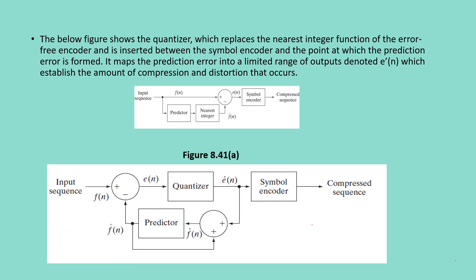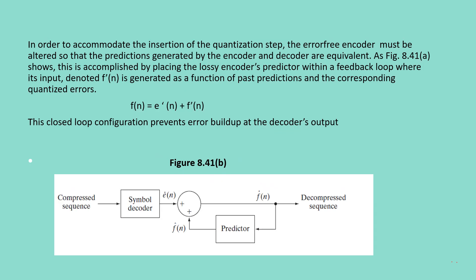We have seen before the lossless predictive encoding which consists of a predictor at both encoder side and decoder side. Now let's see about the lossy predictive coding. The below figure shows the quantizer which replaces the nearest integer function of the error-free encoder. The only difference between the lossless and lossy predictive coding is that the lossless predictive coding does not have a quantizer, but the lossy predictive coding has a quantizer which replaces the nearest integer function of the error-free encoder. And this quantizer is inserted between the symbol encoder and the point at which the prediction error is formed. What it does is it maps the prediction error into a limited range of outputs, denoted by e' of n, which establishes the amount of compression and distortion that occurs.